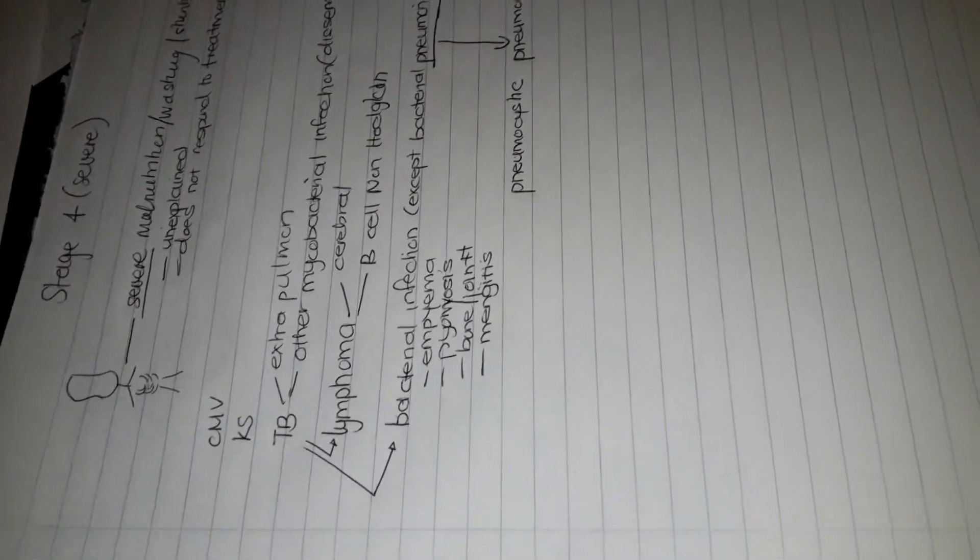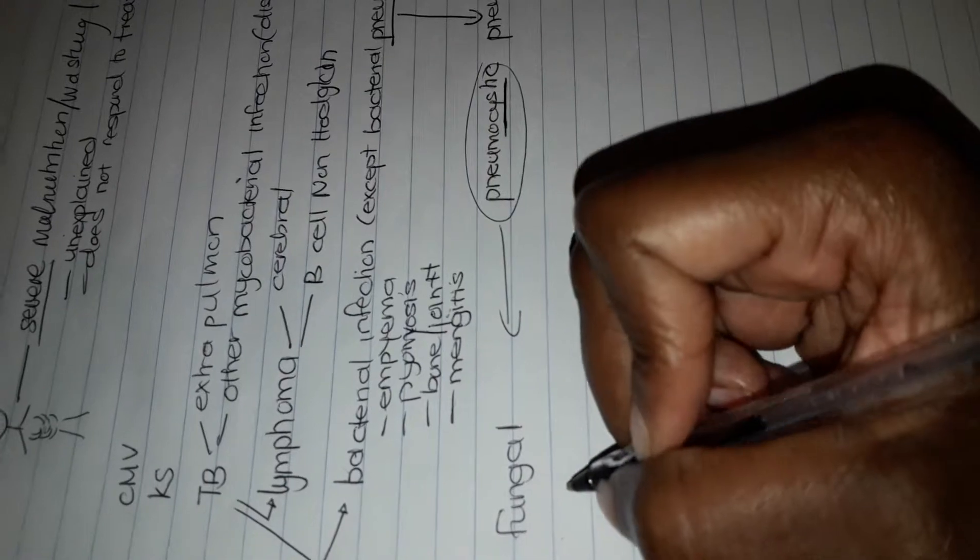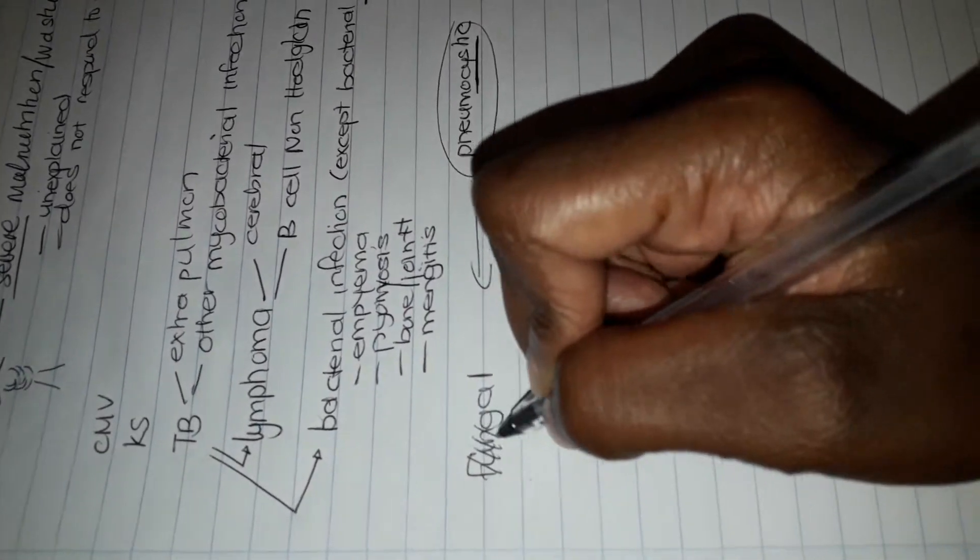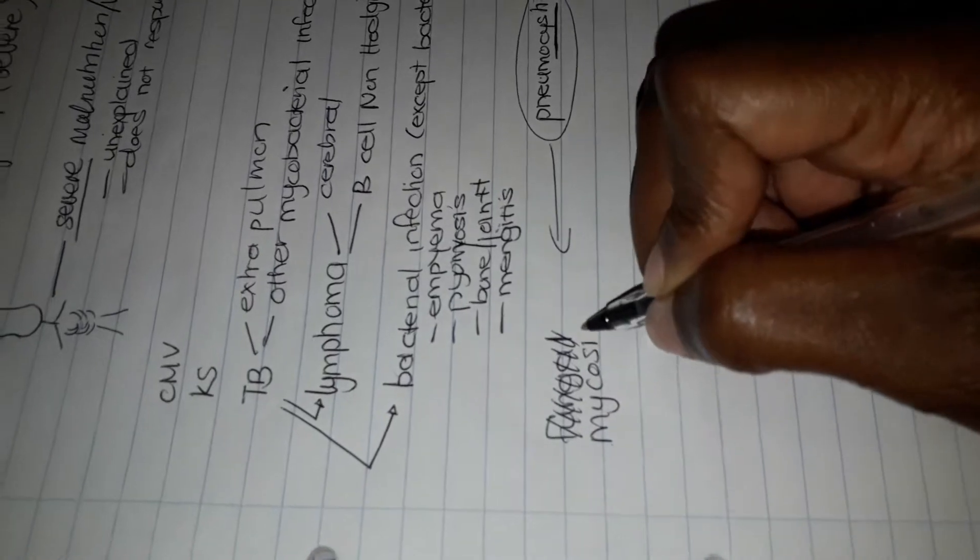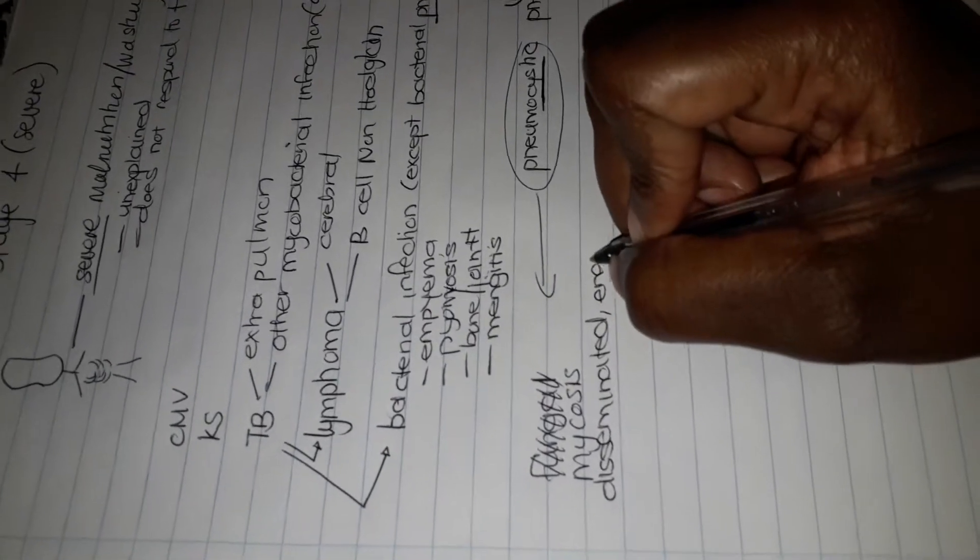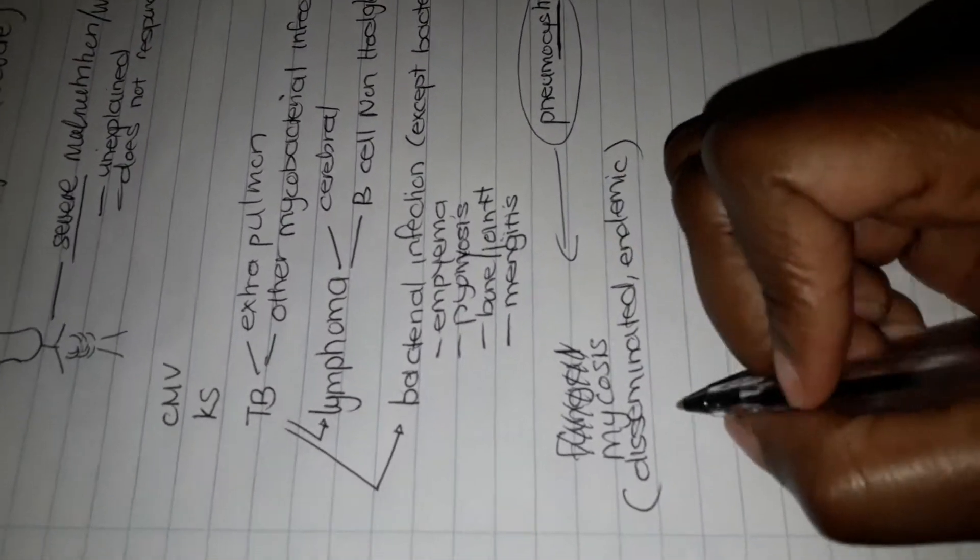The pneumocystis word reminds me of a fungal, I don't know, it just gives me fungal vibes. So the fungal infections, they'll have fungal infections, but more scientifically they have what we call mycosis. This mycosis will be disseminated and it's an endemic type. So they have disseminated endemic mycosis.